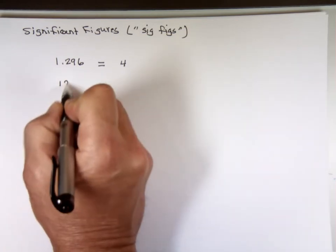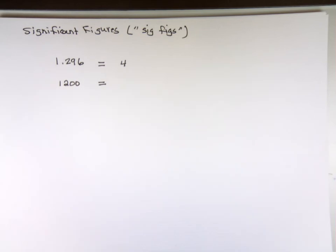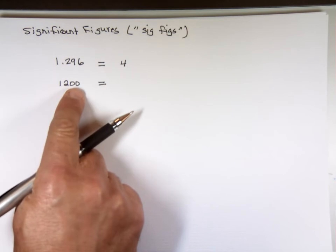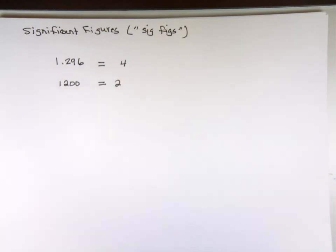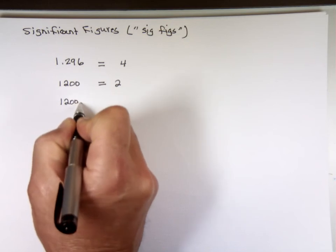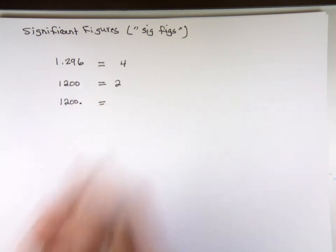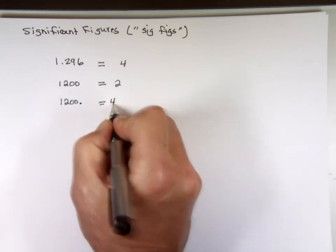1,200 — how many significant digits? Two: the one and two. Zeros are not significant unless something else indicates it. If I put 1,200 with the decimal point, there's a reason why the decimal point is there — because I want to use four significant digits.